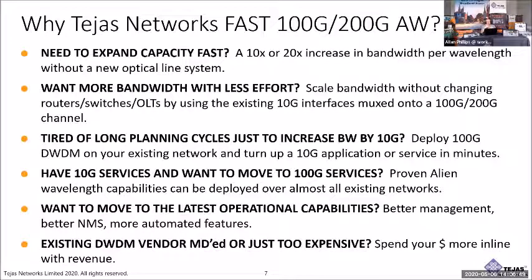Why would you choose Tejas Network's fast 100 gig or 200 gig alien wavelength? Fundamentally, you're looking to expand capacity fast — a 10 to 20 times increase in bandwidth per wavelength without doing a new optical line system. You can keep your folks in the CO rather than running all over your network, just placing shelves where you need additional traffic running over your existing DWDM network. It's a few more people than patching and adding existing 10 gig, but a lot less than building a new network, so you can expand capacity fast.